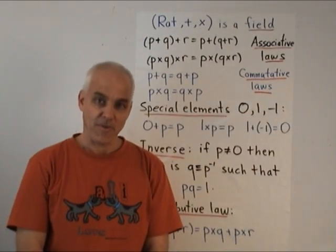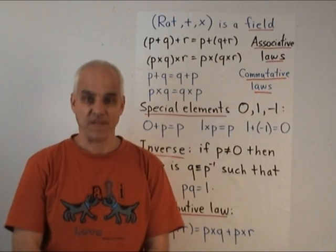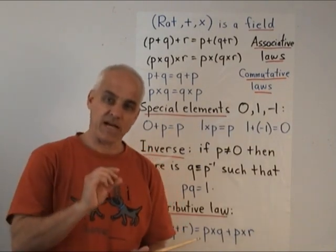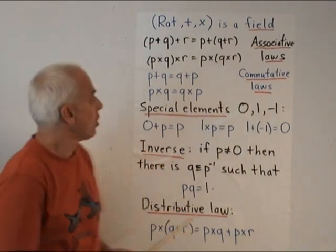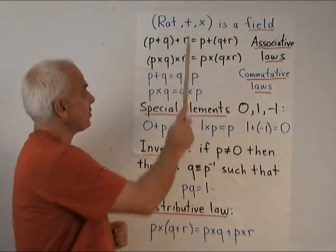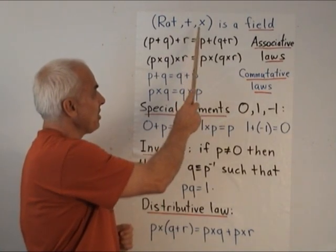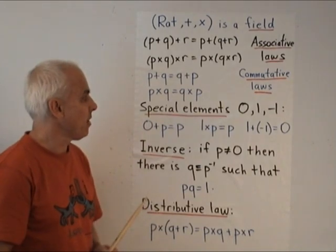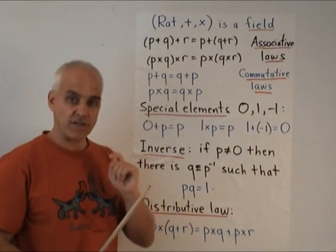The rational numbers are now what is called a field. This is a technical term in mathematics, we want to be precise about what it means. So we'll say that the rational numbers, which is a type of object, together with the operations of addition and multiplication form a field. And what does that mean? Well it means that various laws are satisfied.